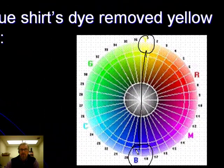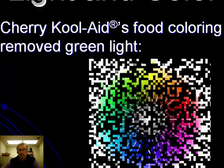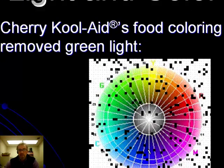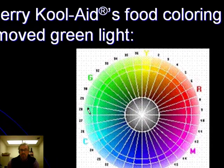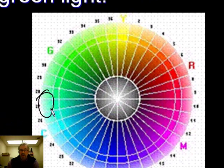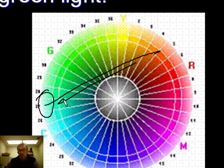Cherry Kool-Aid, for example, has food coloring that takes out green light — a sort of blue-green or cyan light. So 180 degrees across the color wheel, we find red light remaining, and that's the color that we see.